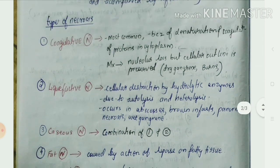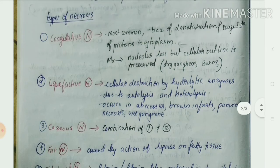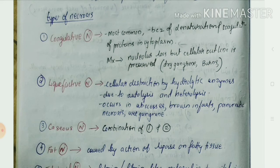You can read the details in your textbooks. Coagulative necrosis is the most common type, caused by denaturation and coagulation of proteins in the cytoplasm. Microscopically, the nucleolus is lost but the cellular outline is preserved. Examples include dry gangrene and burns. Liquefactive necrosis involves cellular destruction by hydrolytic enzymes due to autolysis or heterolysis, and occurs in abscesses, brain infarcts, pancreatic necrosis, and wet gangrene.